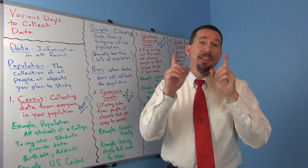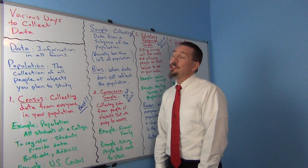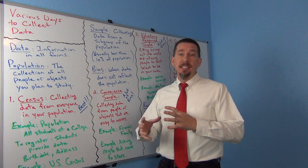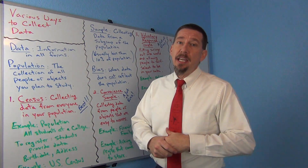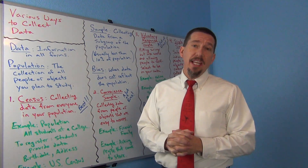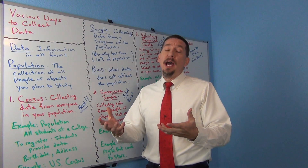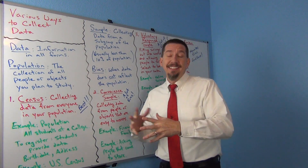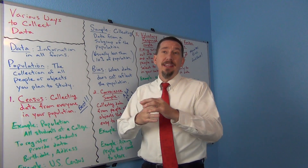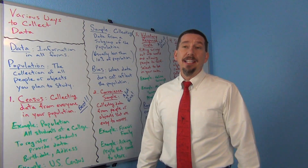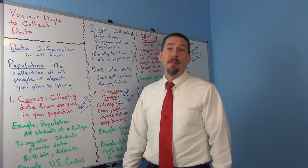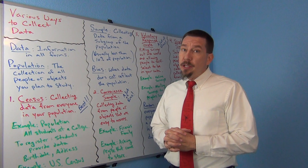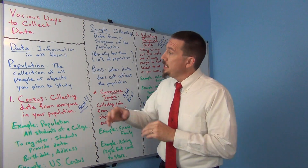Hi everyone, this is Matt Tuchot with Intro Stats. Today we're looking at some various ways of collecting data. In our last video we talked about how there are two main types of data: categorical data and quantitative data. Today we're going to start looking at some of the various ways that people collect data — the good and the bad. We're going to get some new vocabulary words, and one of the first ones is population.